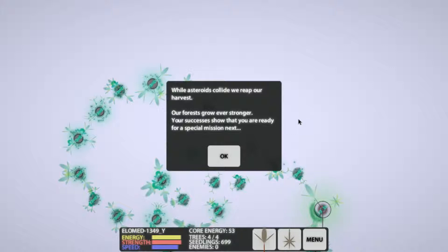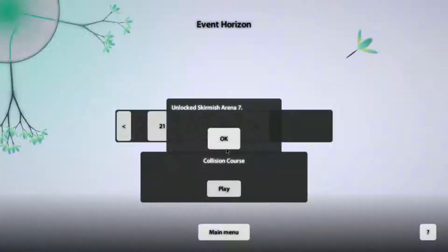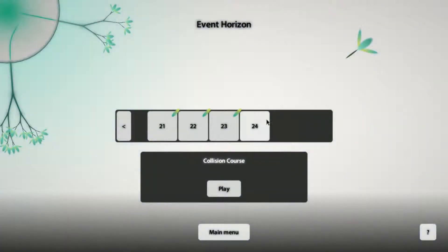Yeah! While asteroids collide, we reap our harvest. Our forests grow even stronger. Your successes show that you are ready for a special mission next. Okay! Special mission! Which is level 24. Second last one, I think, right? Unlock Scrummer 7. Yeah! Ooh, 200. All right, guys. Thanks for watching. We're going to continue this again tomorrow, and I'll see you then. Bye!